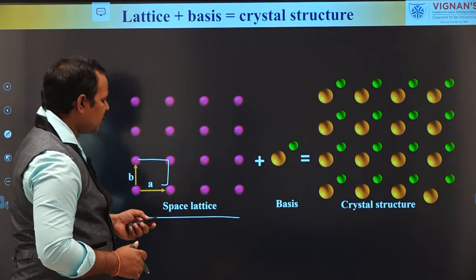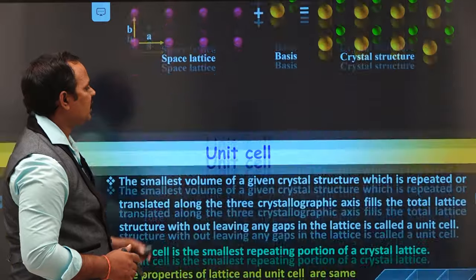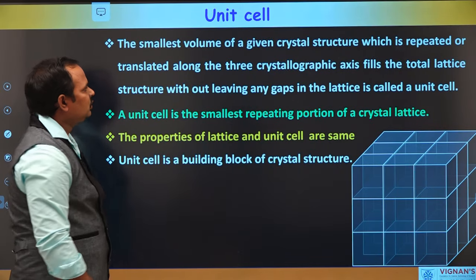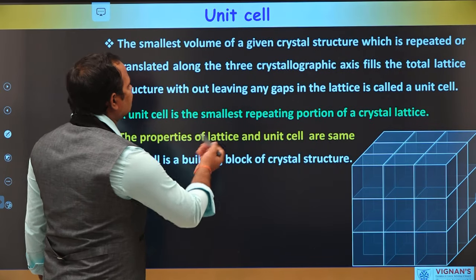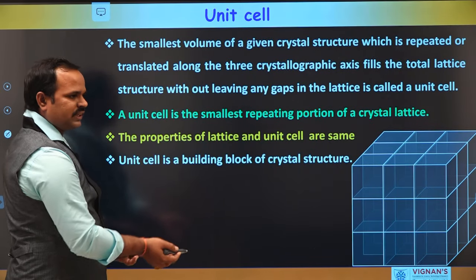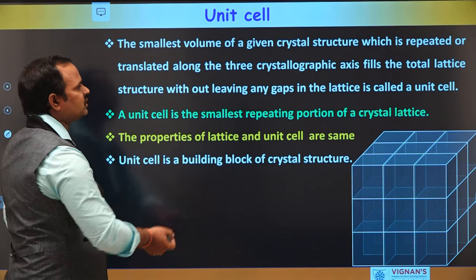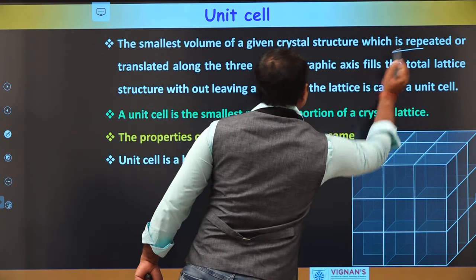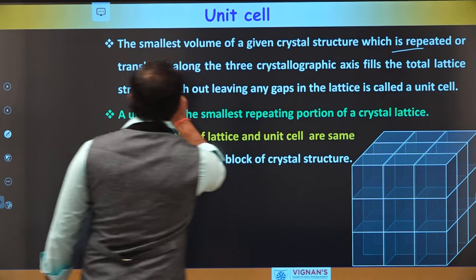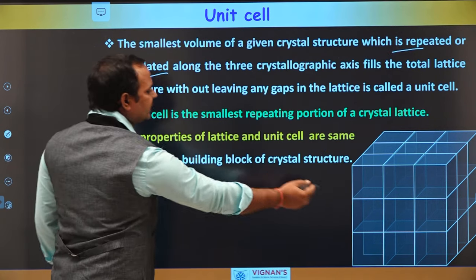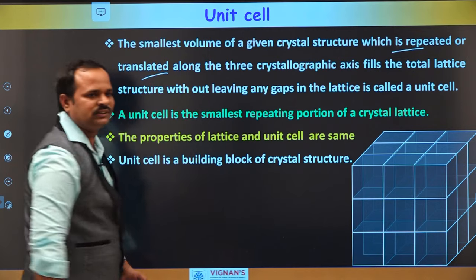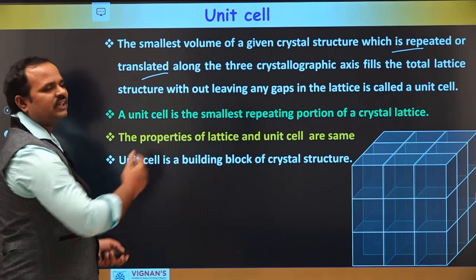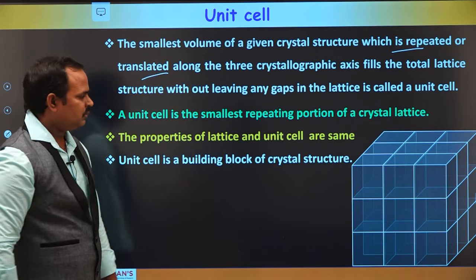That smallest volume is called a unit cell. So, unit cell is the smallest volume of a crystal which can be repeated or translated along the three crystallographic axes, so that we can get a total crystal system.